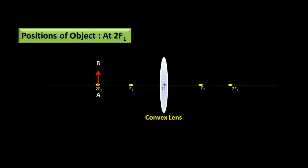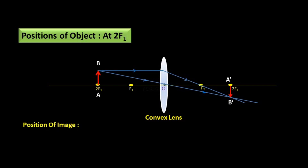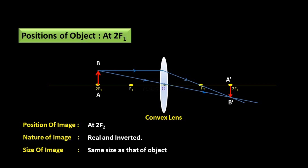Object at 2F1: AB is the object on 2F1. The incident ray parallel to the principal axis passes through focus F2. Another incident ray passes through the optical center without deviation. These two refracted rays cross at a single point — the position of image A'B' is on 2F2. Nature of image: real and inverted. Size of image: same size as that of object.